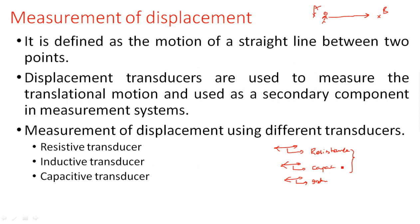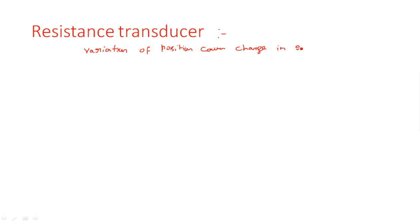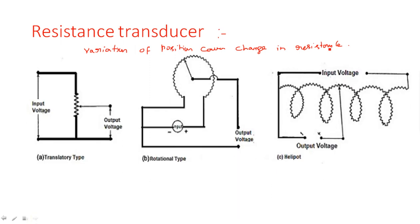Depending upon the type of parameter varying, transducers are classified into resistive transducers, capacitive transducers, and inductive transducers. For resistive transducers, variation of displacement causes a change in resistance. There are three types of resistance transducers: the first is the translatory type, the second is the rotational type, and the third is the helipot.